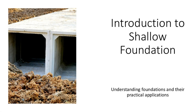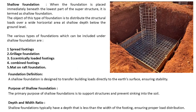Now let us understand the practical applications of shallow foundation and different types in detail. When the foundation is placed immediately beneath the lowest part of the superstructure, it is known as shallow foundation. It covers the load coming from the roof to the bottom area of the superstructure. It is a wide horizontal area at shallow depth below the ground level. The types included under shallow foundations are spread footings, grillage foundation, eccentrically loaded footings, combined footings, and mat or raft foundation.